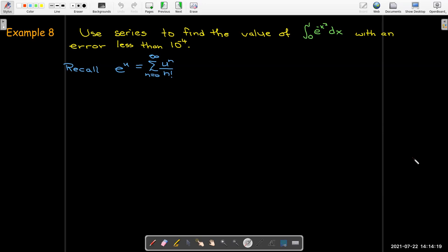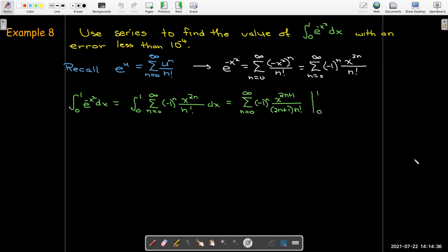So we'll start with our power series for e to the u. We'll replace u with negative x squared. That gives us an alternating series with even powers of x. And so now we can integrate that power series term by term. I don't need a plus c because this is a definite integral. I'm going to evaluate this from 0 to 1. And when I put in 0, I just get 0. So when I put in 1, I get this alternating series here. And this would be the exact value.